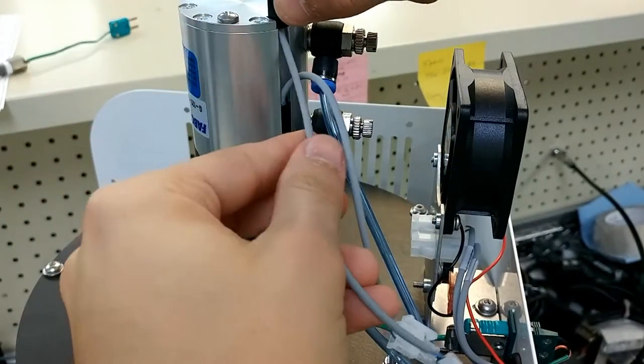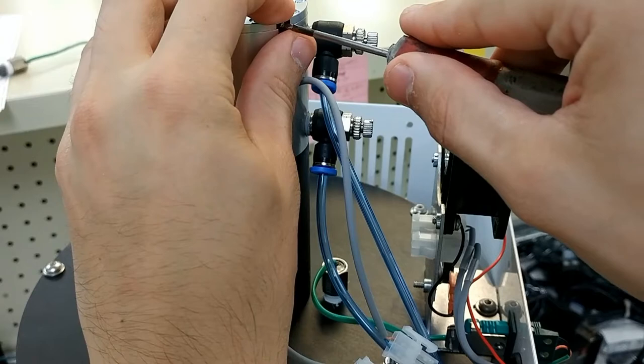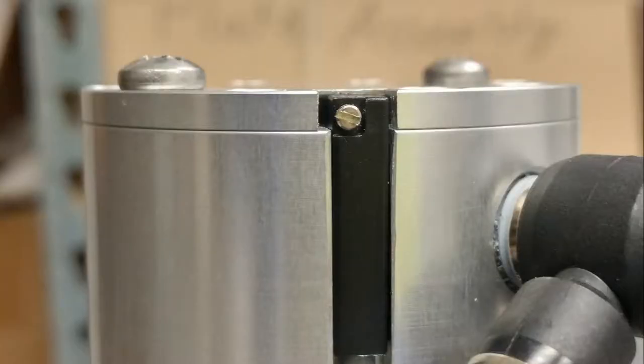Next, take your upper sensor and insert it so that the screw is at the top side of the pneumatic cylinder. Again, tighten it lightly, and I will show you a brief photo of what the spacing should look like.